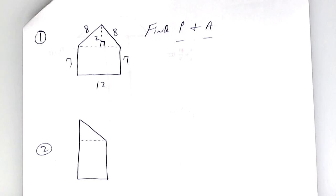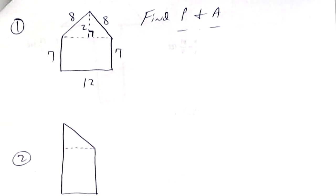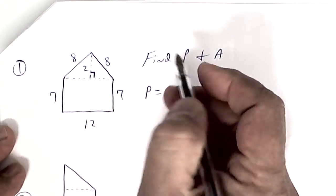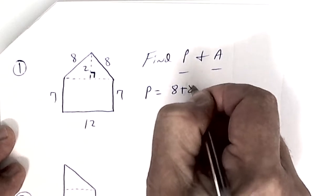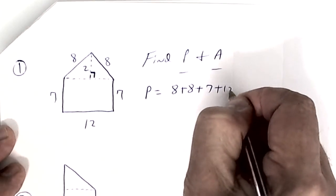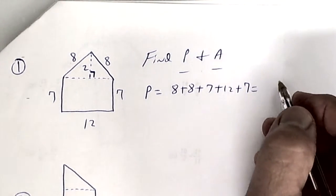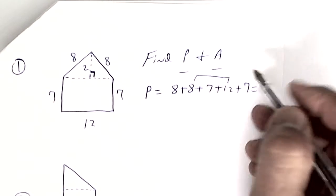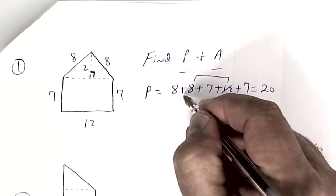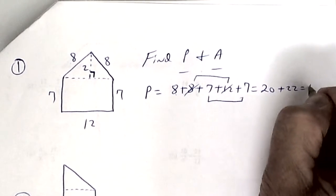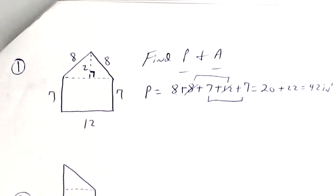I want you to draw number one and I'll make it a little bigger for you. Draw that first diagram and what we're going to do is perimeter and area. Let's do perimeter first because that's easier. So the perimeter is going to be 8 plus 8 plus 7 plus 12 plus 7. This right here is 20 between those two. This is 14 and 8 I think is 22 and we're going to get 42 inches for perimeter.